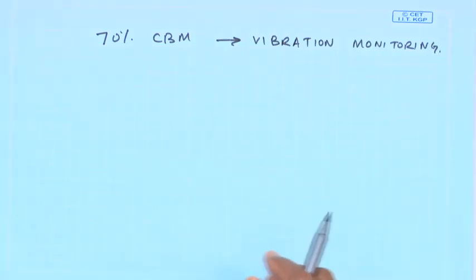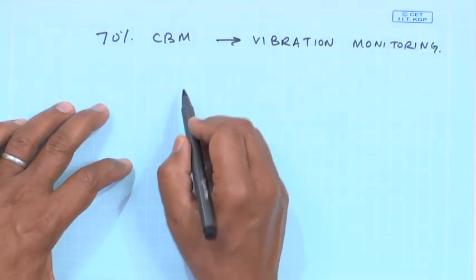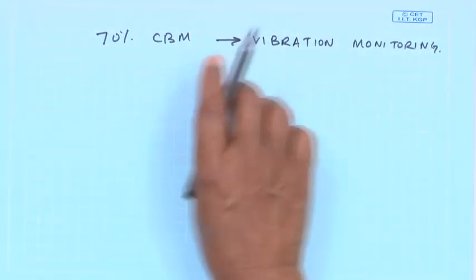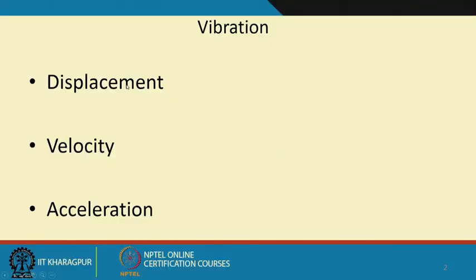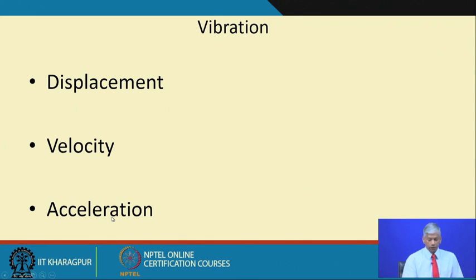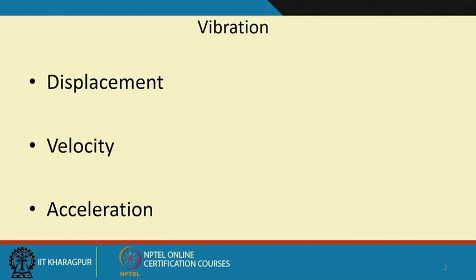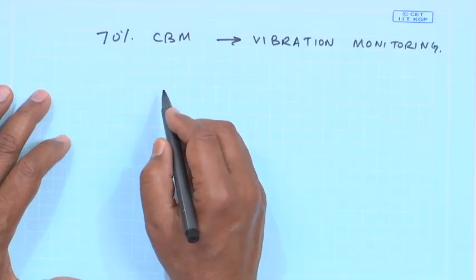Fundamentally, vibration can be represented either as displacement, velocity, or acceleration. A fundamental question which has always been asked is: what should I measure when asked to measure vibration — should I measure displacement, velocity, or acceleration? I will give you a simple reason why and how.